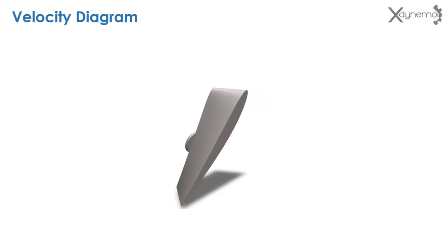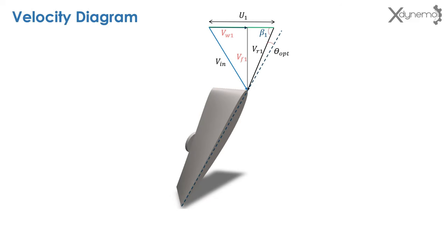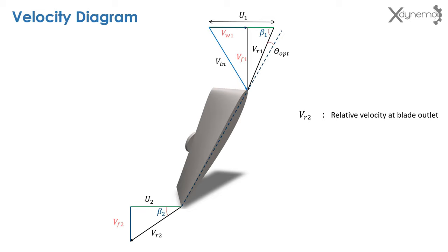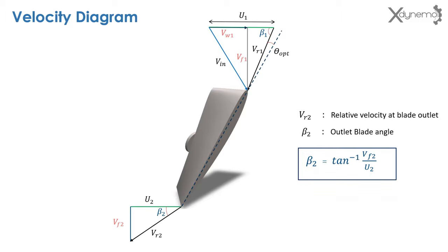Here is the entire cross section of the blade. This is the velocity diagram at the inlet. Look at the velocity diagram at the blade outlet. Vr2 is the relative velocity at blade outlet. Beta 2 is the outlet blade angle. Here is the equation to calculate outlet blade angle.